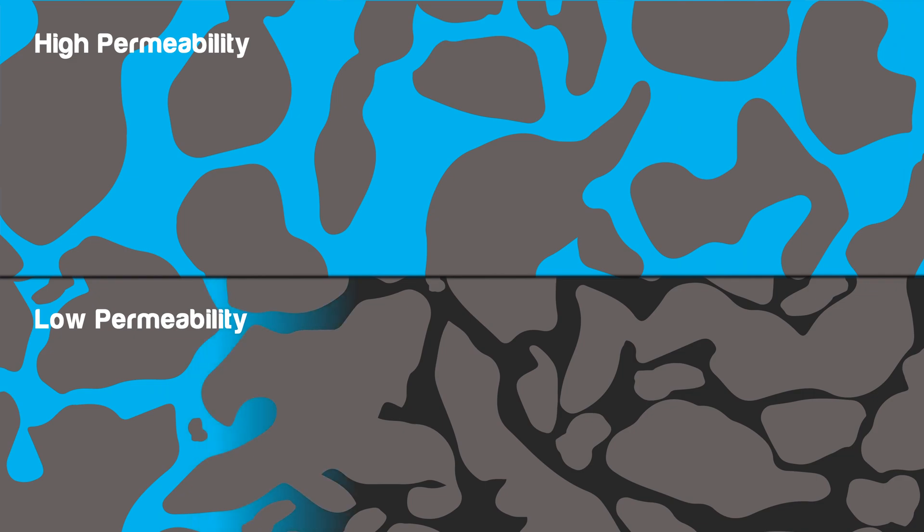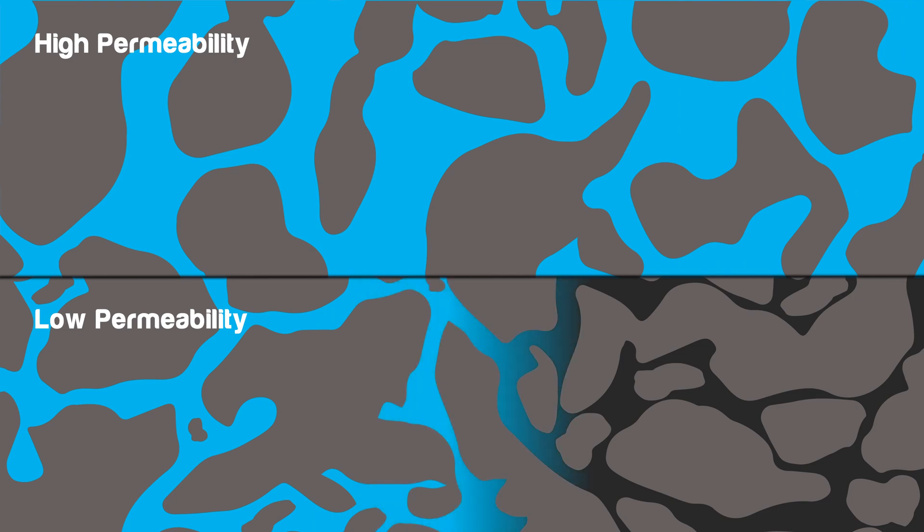The permeability of a rock measured when it's 100% saturated with a single-phase water, oil, or gas is often called single-phase permeability, absolute permeability, or just permeability.